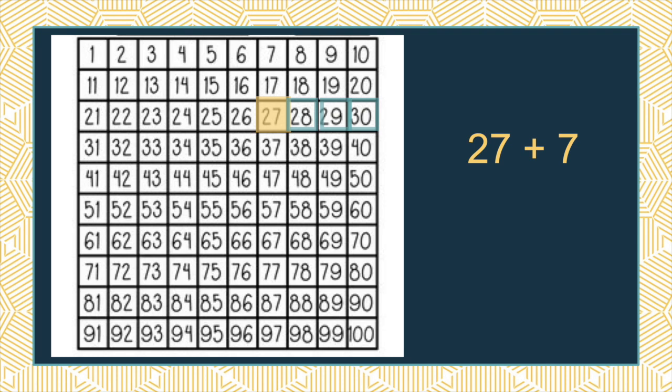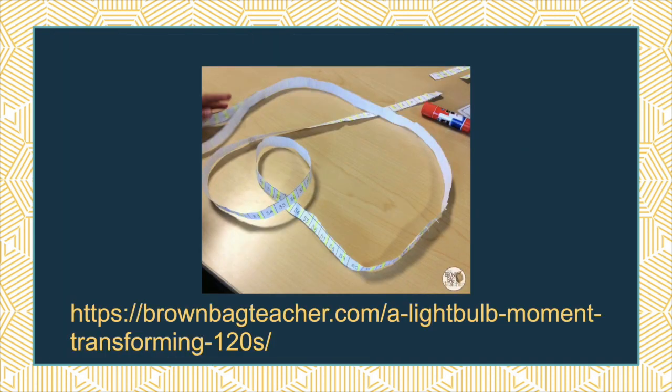This is an example of why I prefer a number path and number line over the hundreds chart. The Brown Bag Teacher, which I've linked below, took a 120s chart and had students cut it up and glue the strips together to create one long number path from 1 to 120. That linear model is just way better for addition and subtraction — when things are in a line, it flows more naturally for kids, and it connects to the number line they'll use later.